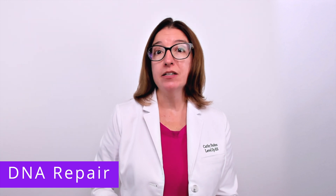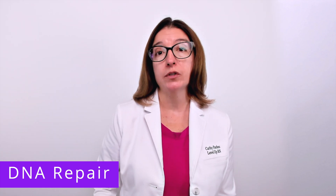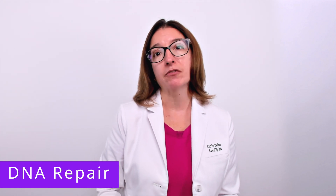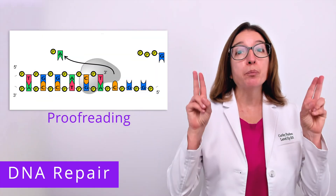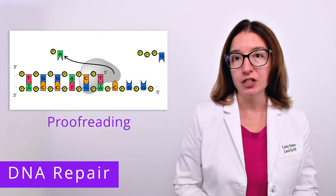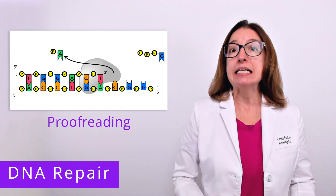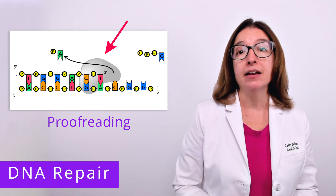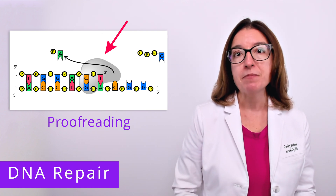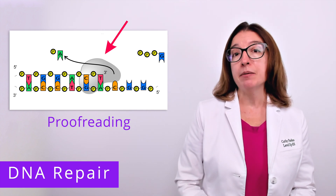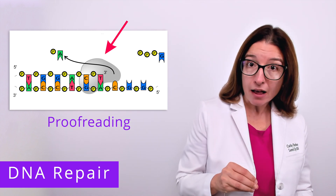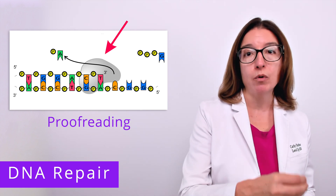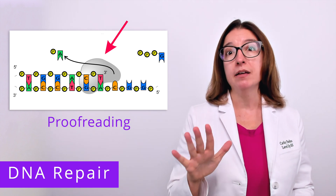Let's now talk about DNA repair. When an error is introduced into an organism's DNA during DNA replication, or as the result of a mutation, there are some means of correcting those errors. The first is proofreading that occurs during DNA replication. During the replication process, DNA polymerase will proofread each new nucleotide as it is being added onto the new strand being synthesized. If an error occurs, then DNA polymerase will excise, or cut out, the incorrect base and replace it with the correct one before resuming the replication process.